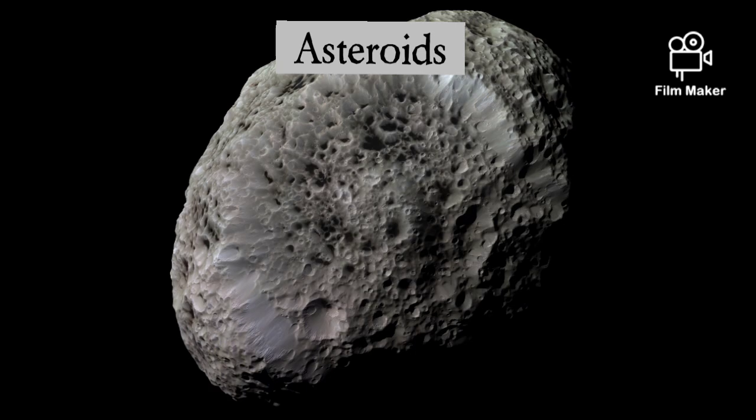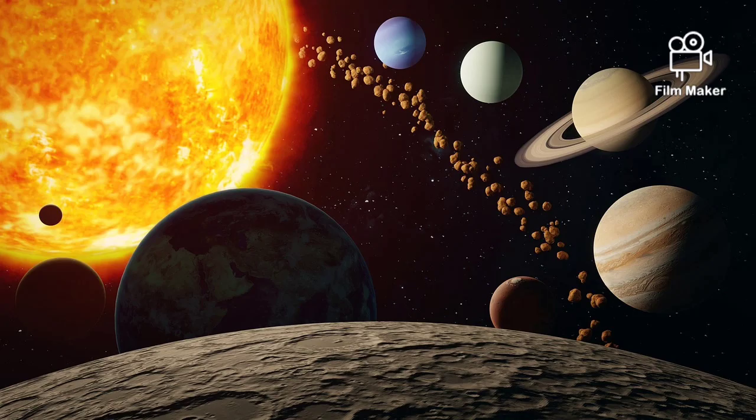Then asteroids. Between the planets Mars and Jupiter, there is a band of numerous small heavenly bodies. They are called asteroids.